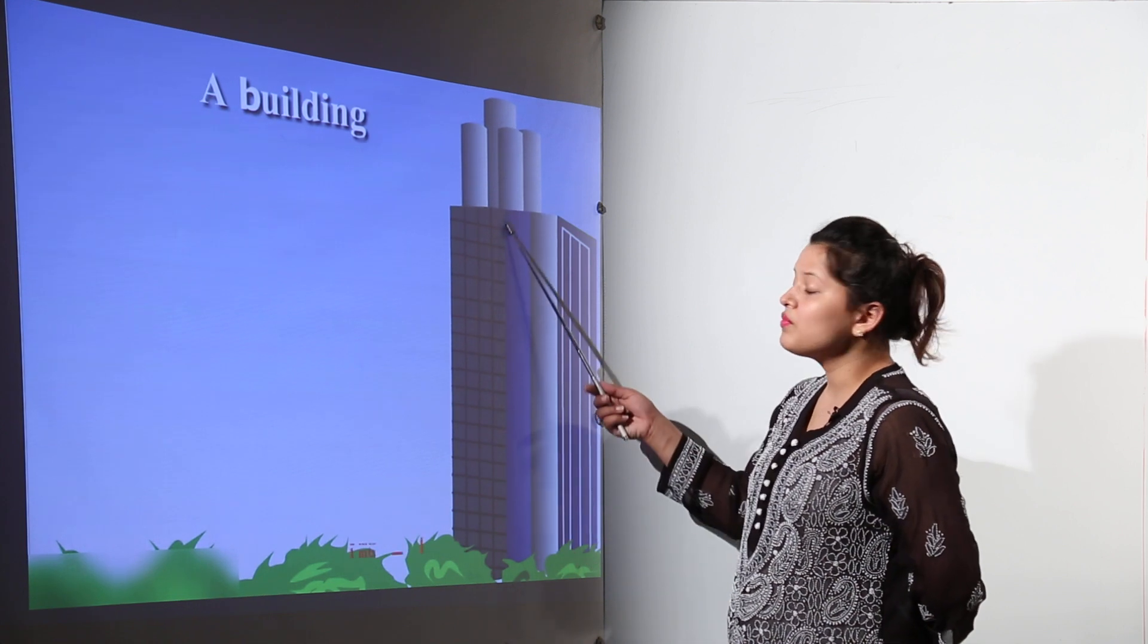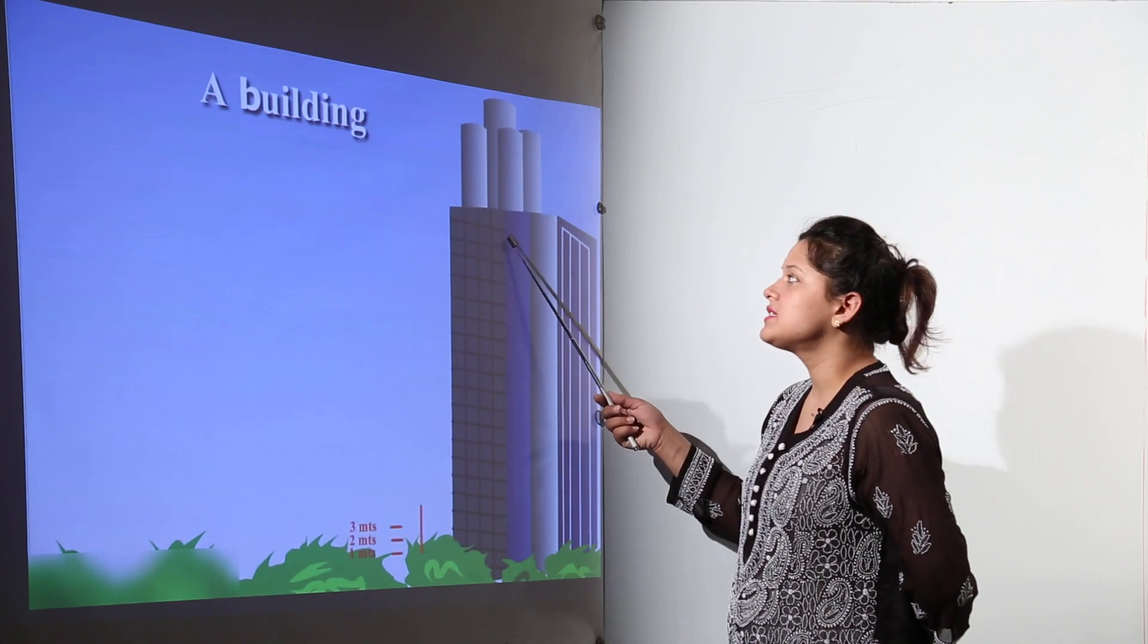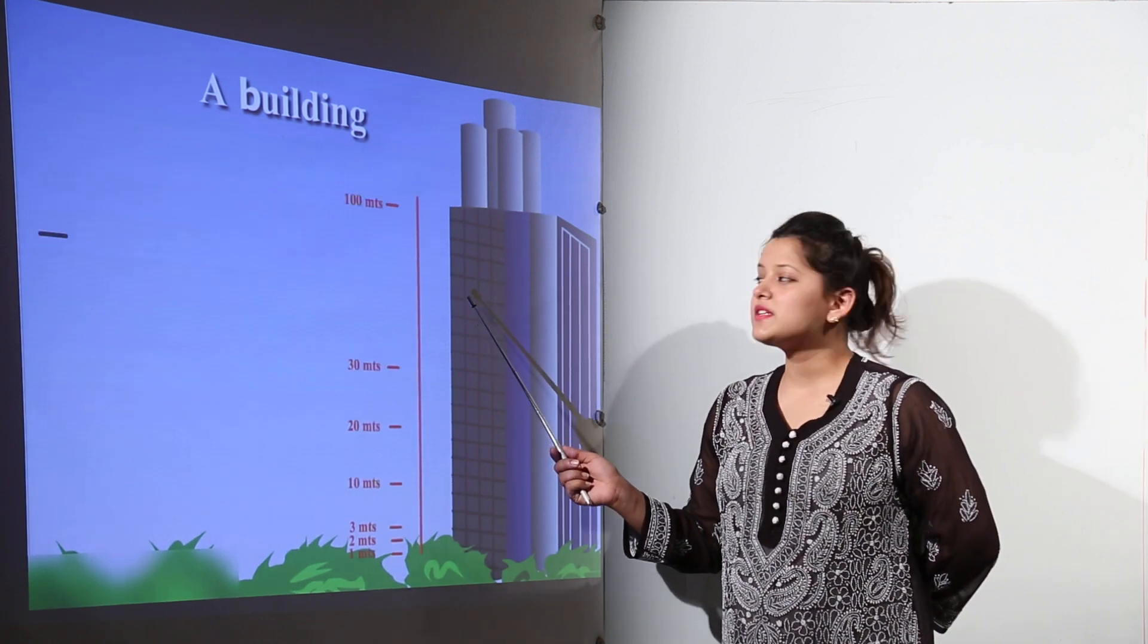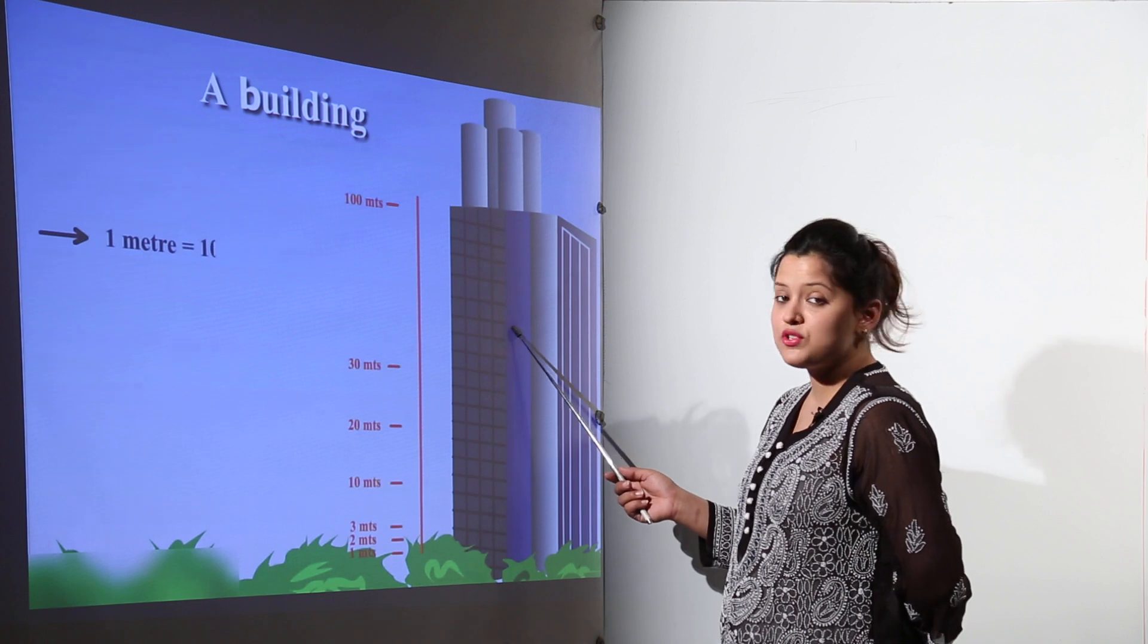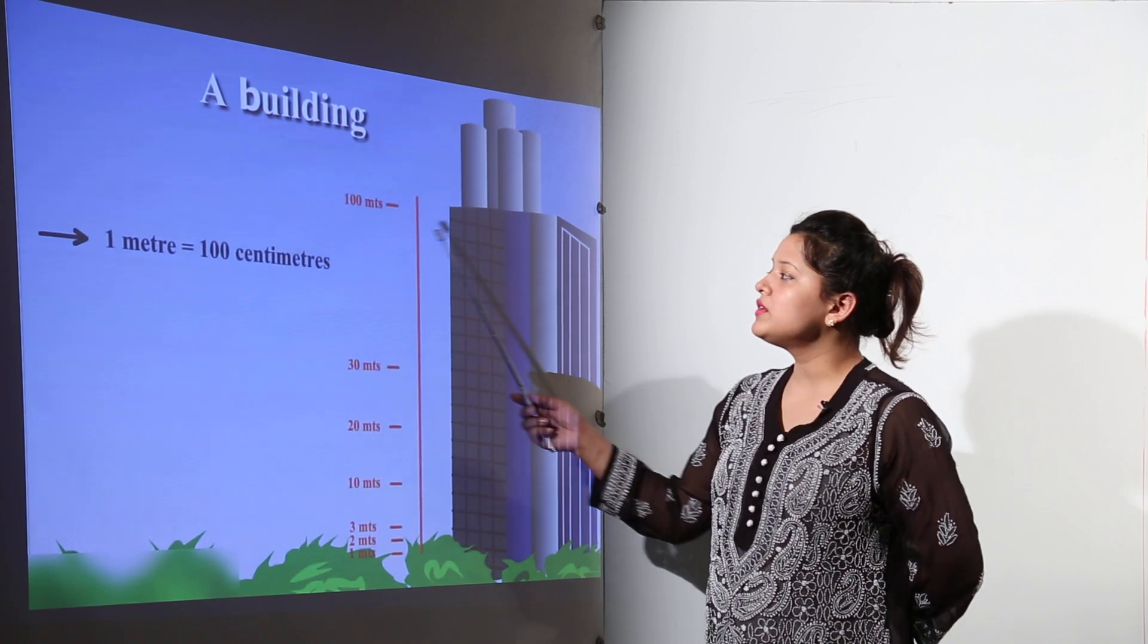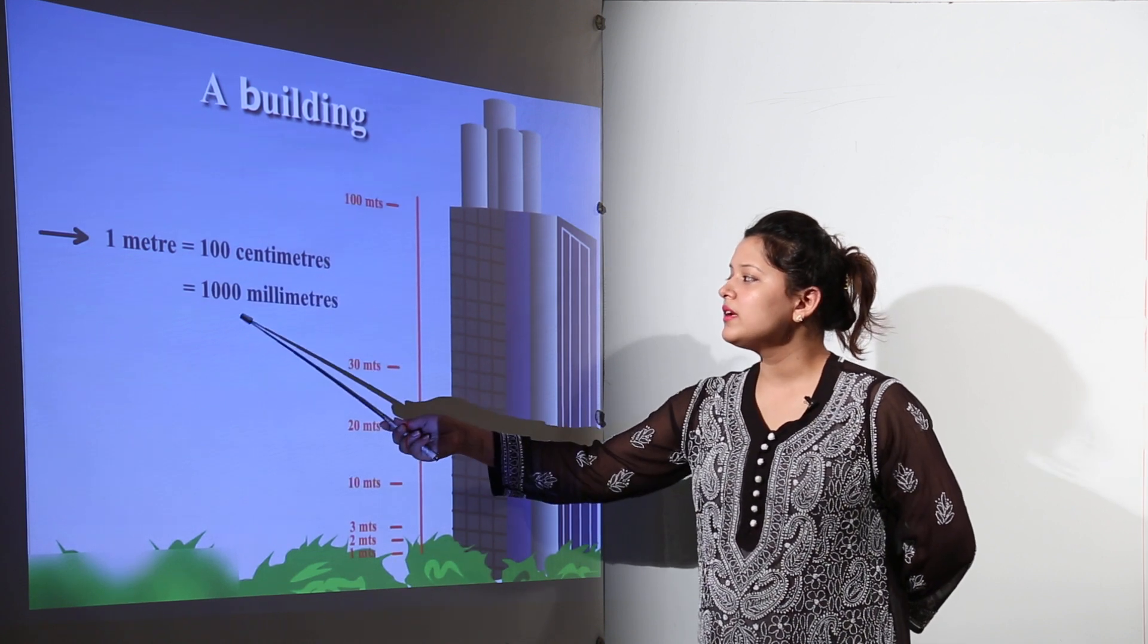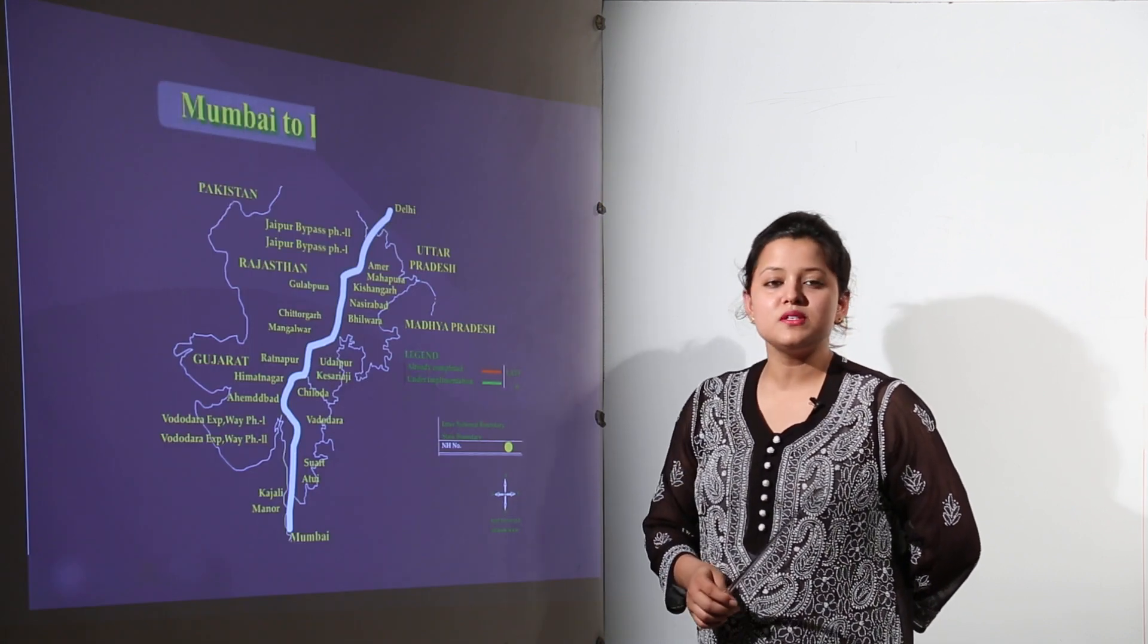Now this is a building over here and we want to measure its height. Its height if measured in centimeters would be too big. So centimeters are too small to be measuring this building. Therefore we use the meters here. One meter would be equal to hundred centimeters or it would be equal to one thousand millimeters.